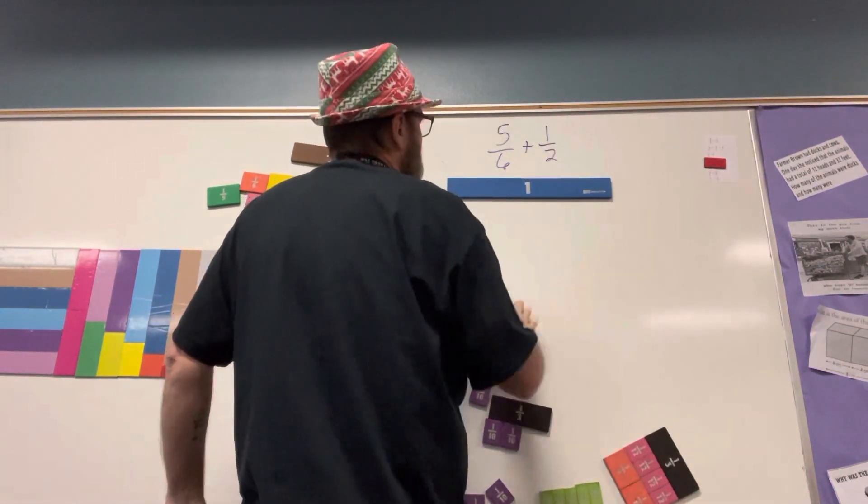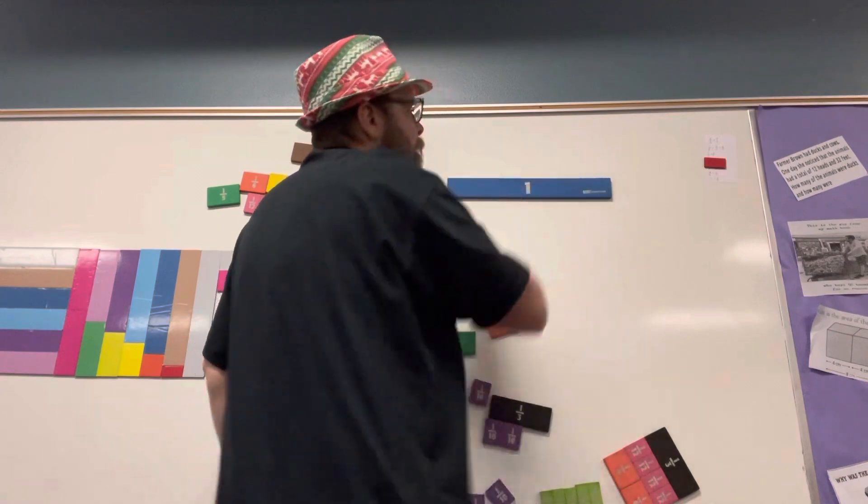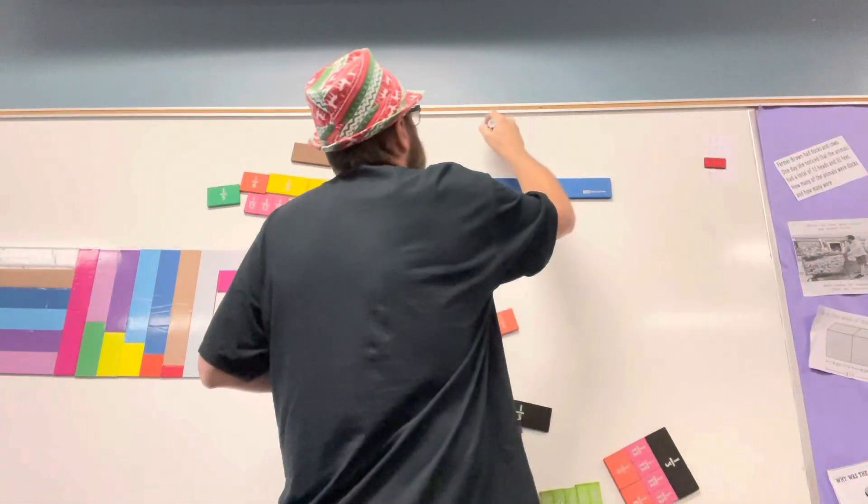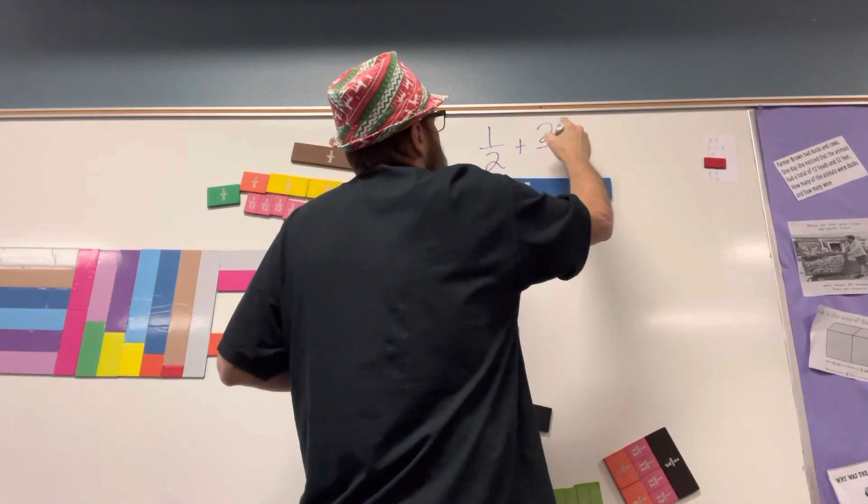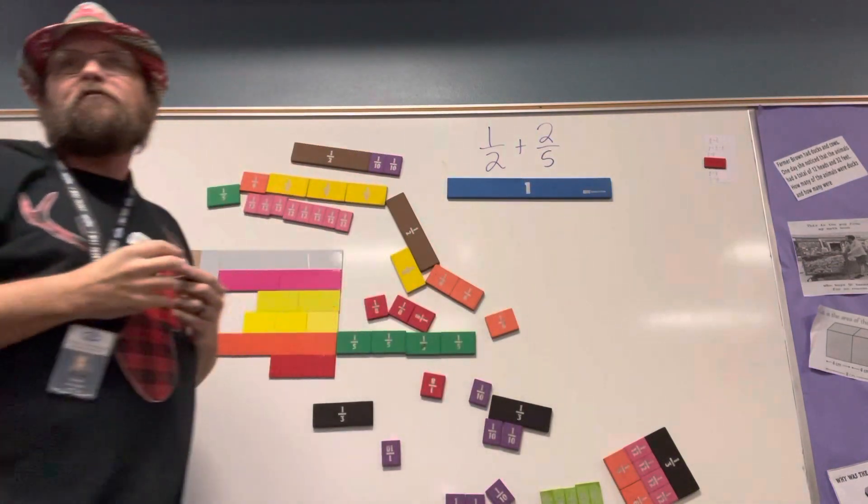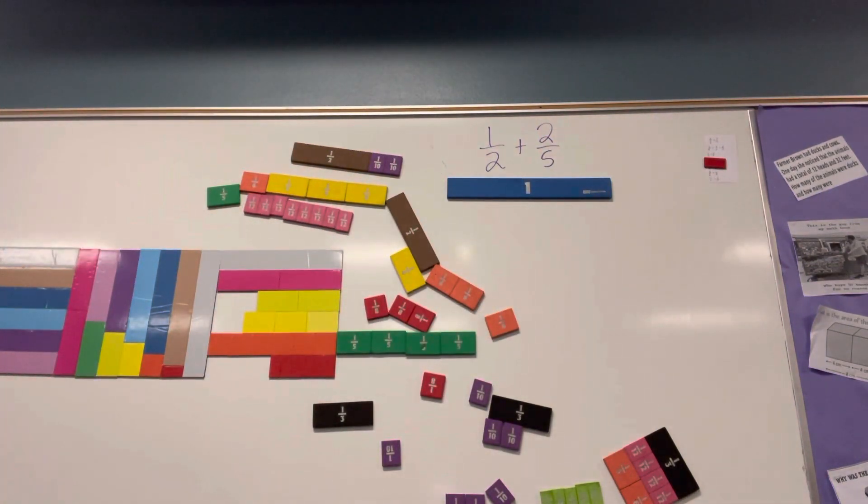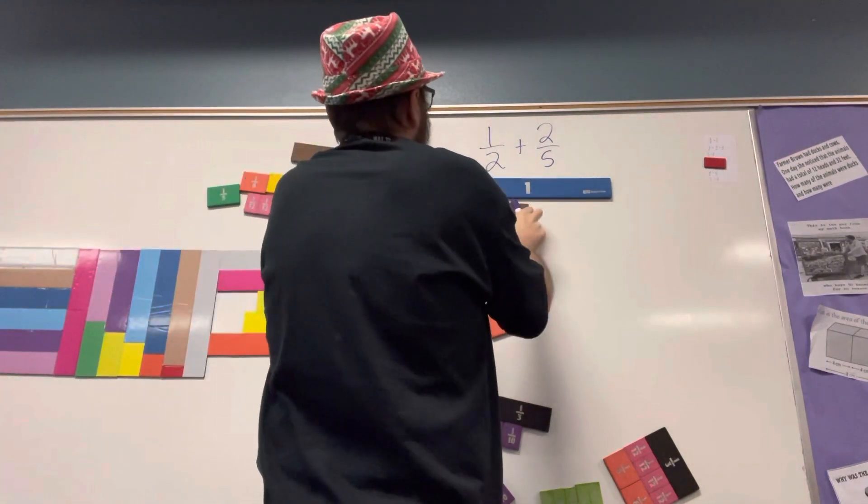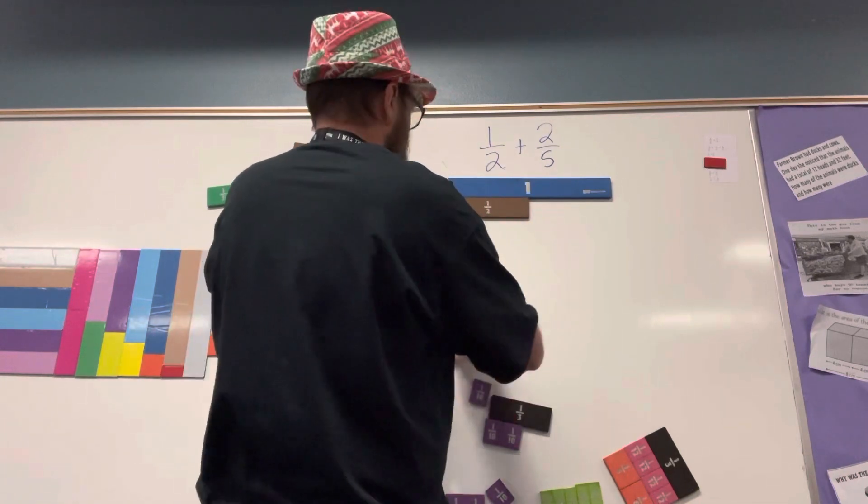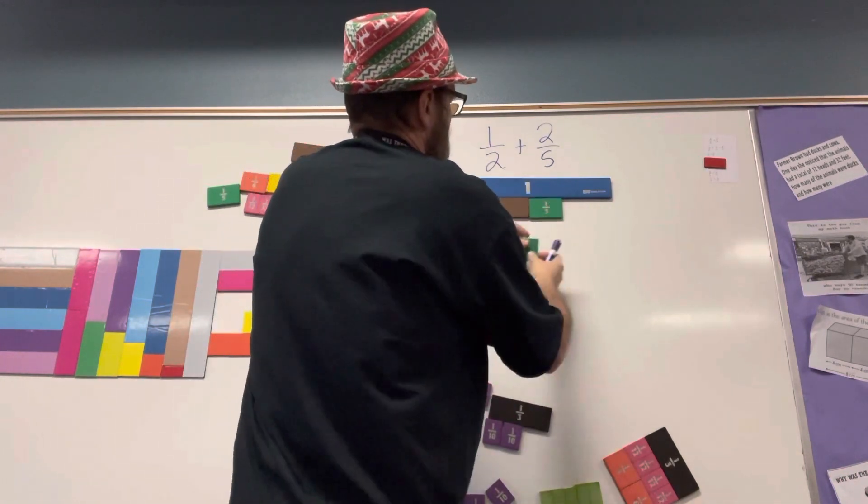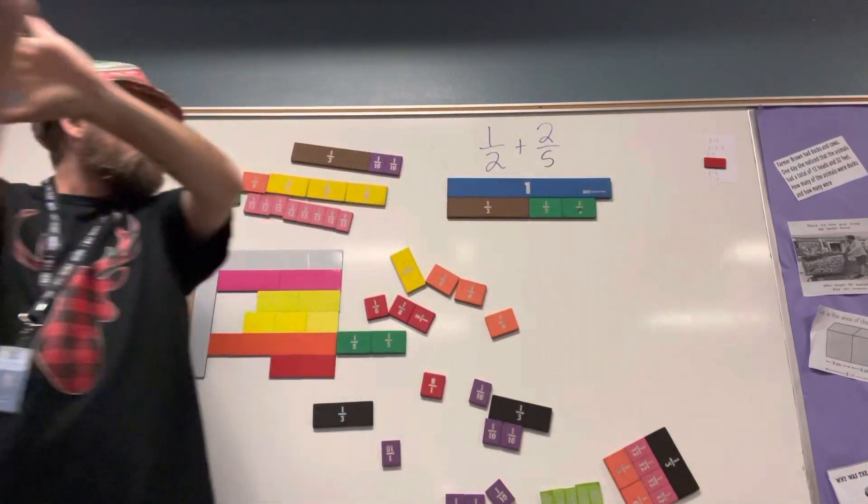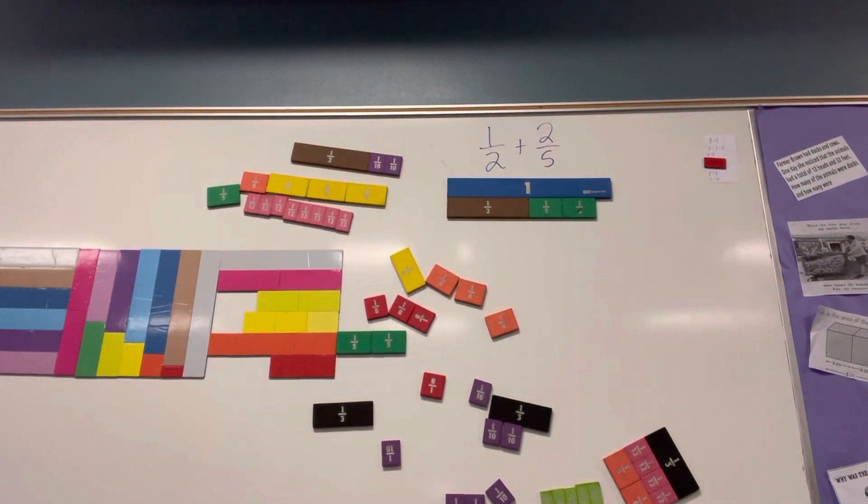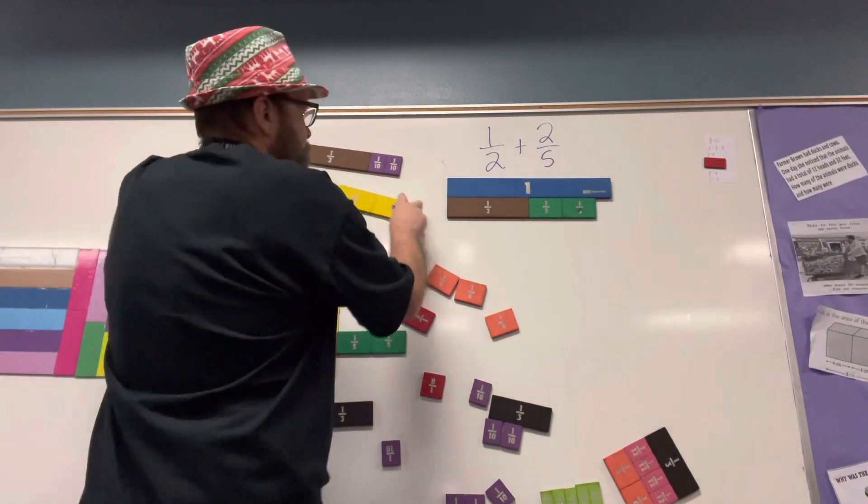All right, our next problem is one half plus two fifths. Again, we always start by comparing it to one. That way we can tell if we have a whole number in our answer or not. Is that less than or greater than one? Less than one.